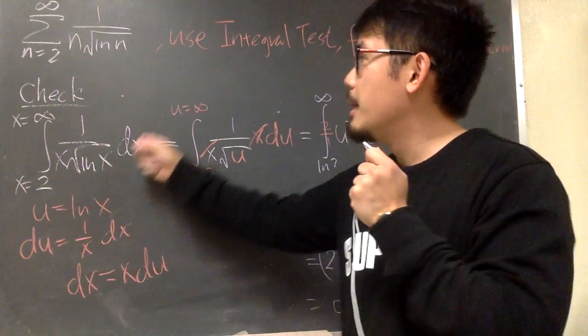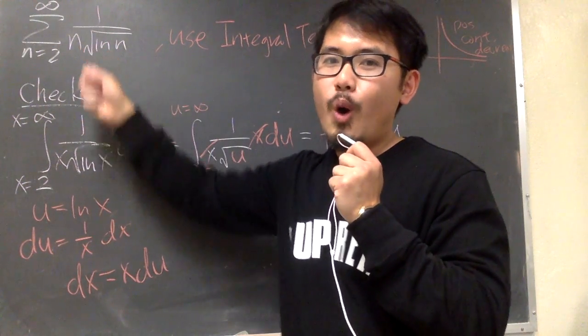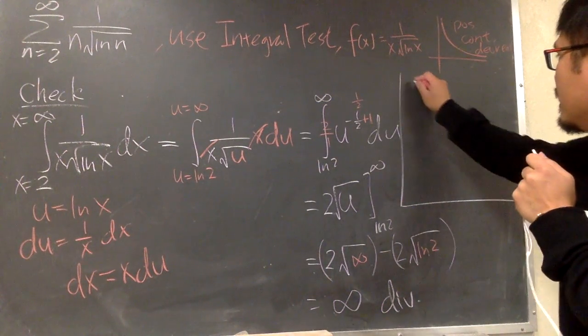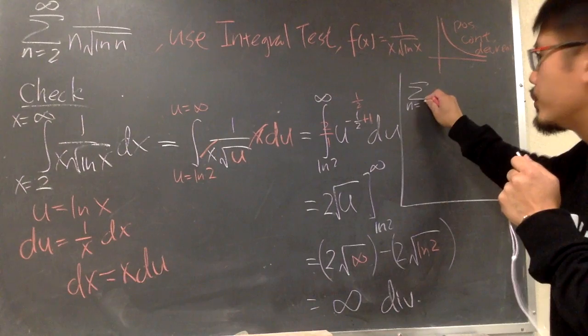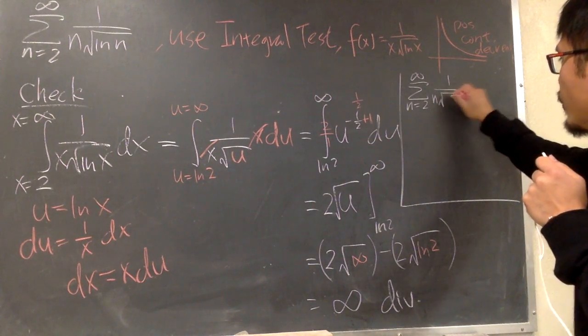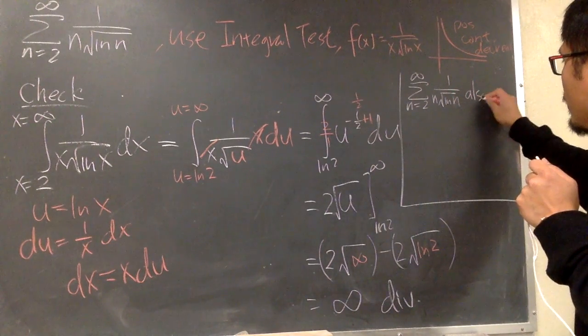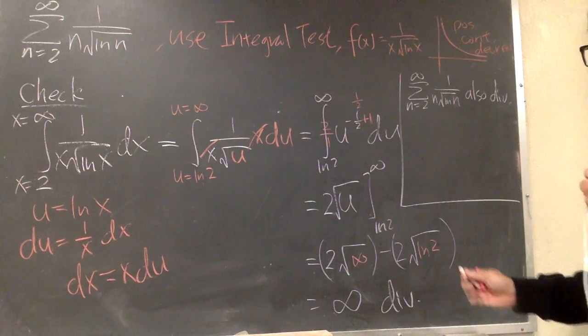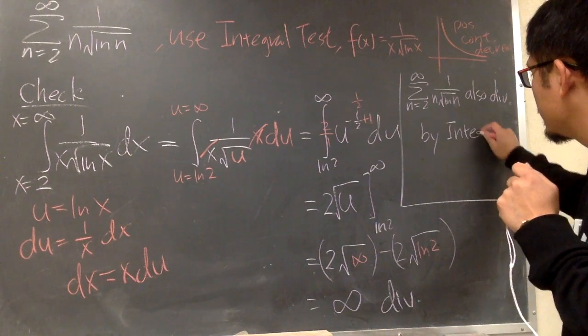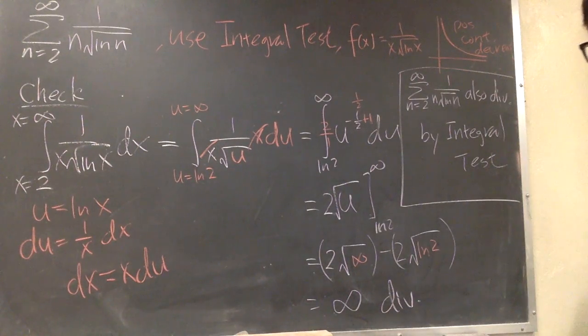And now, by the integral test, we can also conclude that the original series that we're trying to do also diverges. And I just have to write it down somewhere, right? Perhaps here. The original sigma going from 2 to infinity, 1 over n square root of ln n. This right here also diverges, and the reason for that is by the integral test. That's it.